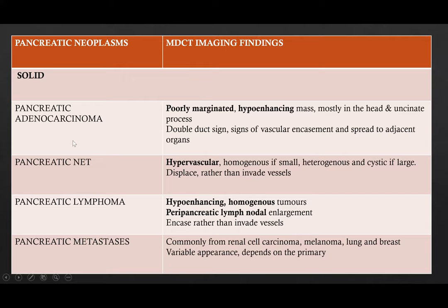Regarding MDCT imaging findings: pancreatic adenocarcinomas present as poorly marginated hypodense masses mostly located in the head and uncinate process, showing the double duct sign — dilatation of the MPD as well as the CBD — along with signs of vascular encasement and spread to adjacent organs. Pancreatic neuroendocrine tumors are hypervascular, presenting as homogeneous masses if small and heterogeneous or cystic if large; they displace rather than invade vessels. Pancreatic lymphomas present as hypoenhancing homogeneous tumors with peripancreatic lymph nodal enlargement, encasing rather than invading vessels. Pancreatic metastases have a variable appearance depending on the primary, commonly arising from renal cell carcinomas, melanomas, lung carcinomas, and breast carcinoma.